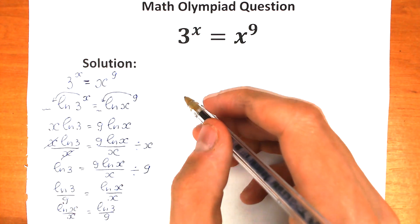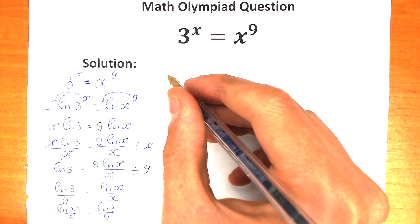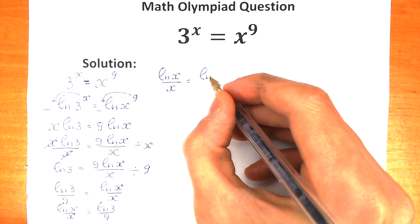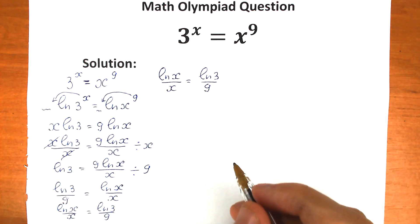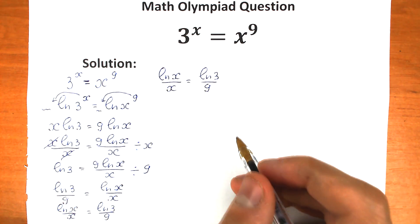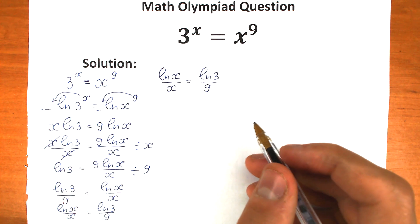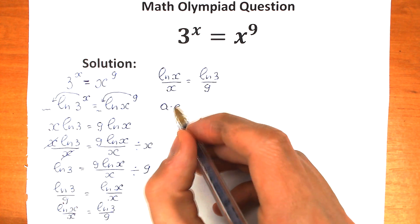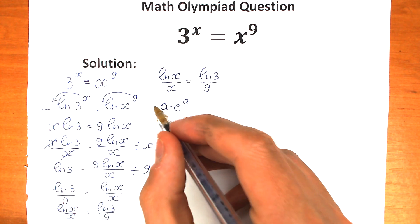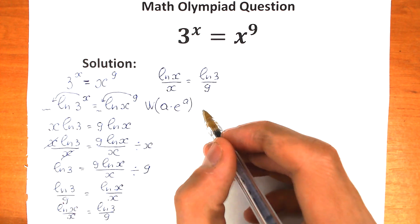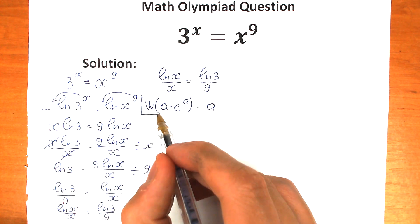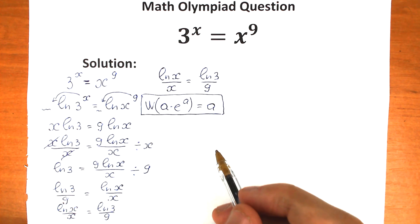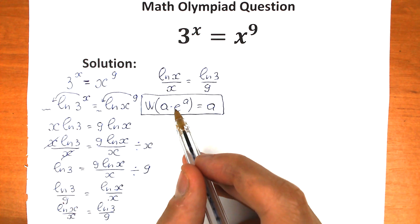This is our first step to create a great expression. Now we need to know about the Lambert W function. If you have an expression like a times e to the power a — where a is whatever expression you want — and we apply the Lambert W function, we get only a. This is a really important function that will help us a lot. Right now let's try to create this e, because we don't have e here yet.